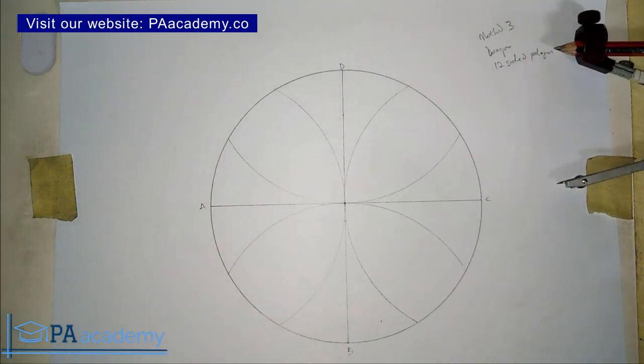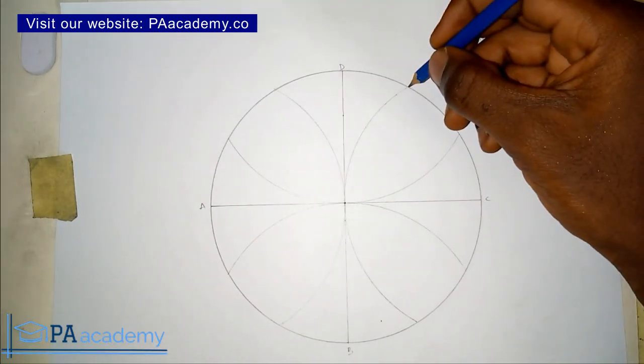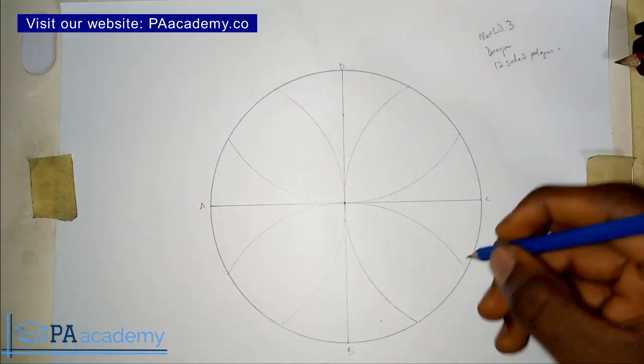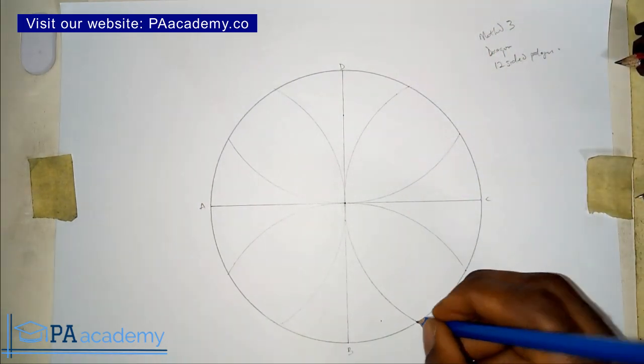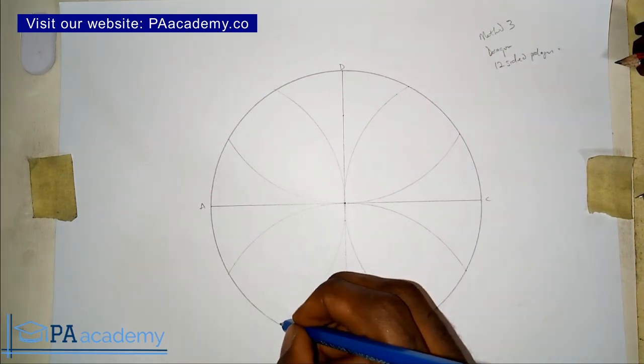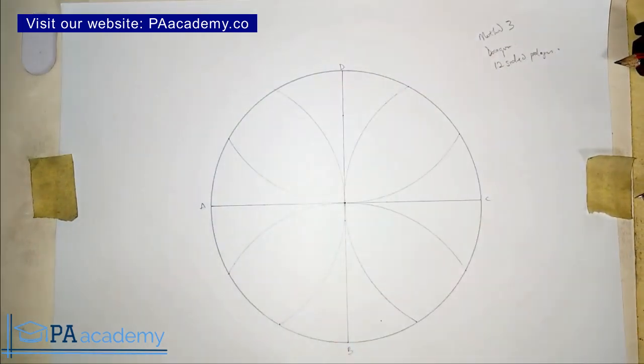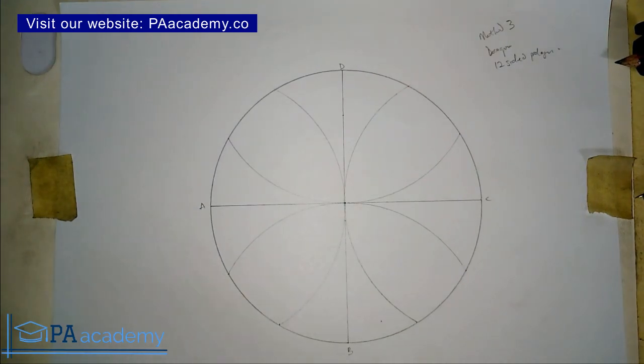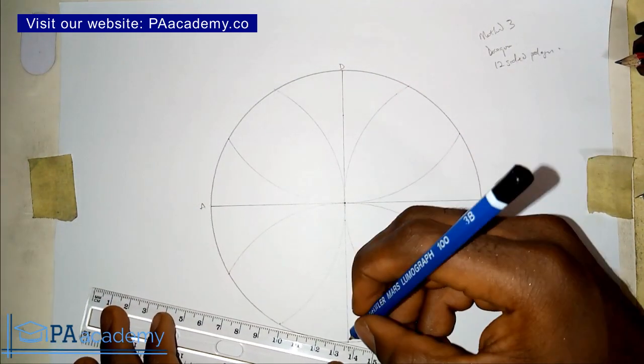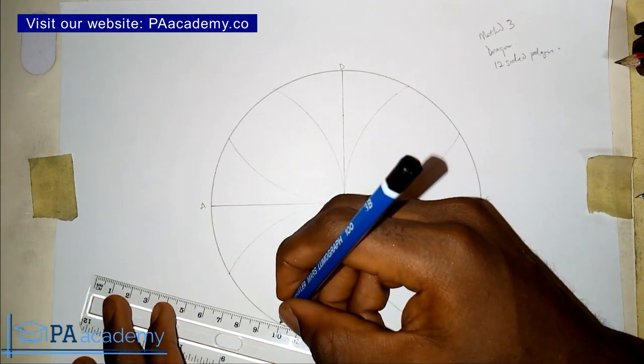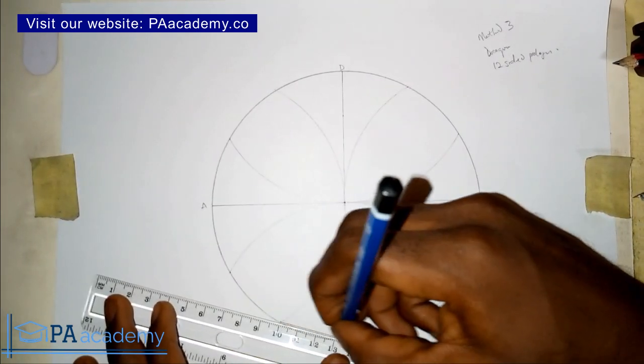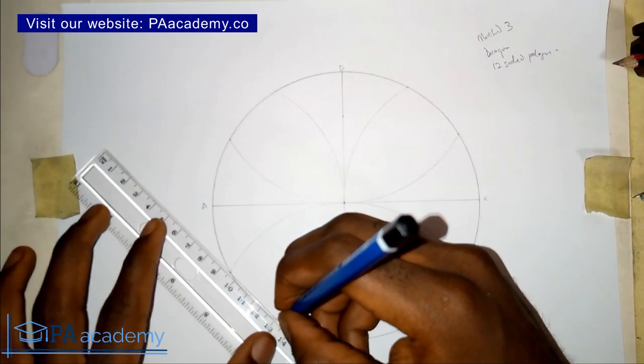What you have to note is what we've just drawn is touching the circumference of the circle at all those points. So you are going to note all those points. And what you are going to do is join them together. So you are going to be using a bold line. So you connect everything together.